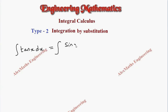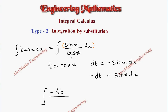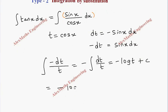Integration of tan x can be written as integration of sin x divided by cos x. Now we take the substitution t equal to cos x, then its differentiation dt is minus sin x dx. In the numerator we have sin x dx, so taking the minus sign to the other side gives minus dt. Replacing everything, we get integration of minus dt divided by cos x, which is t. Taking the minus out, we have minus integration of dt by t, which is minus log t plus c.